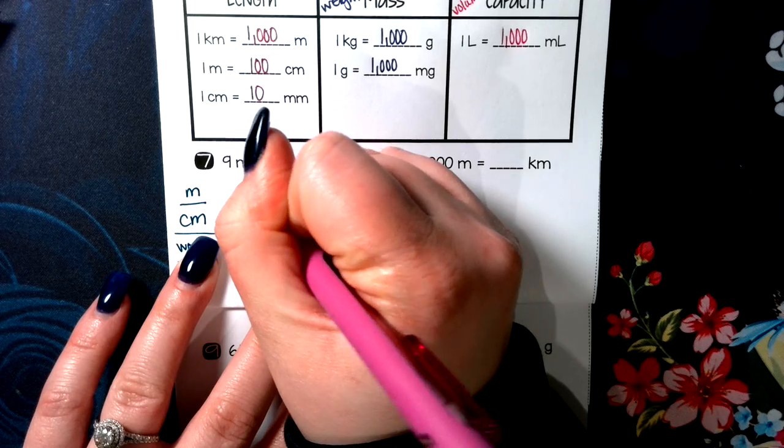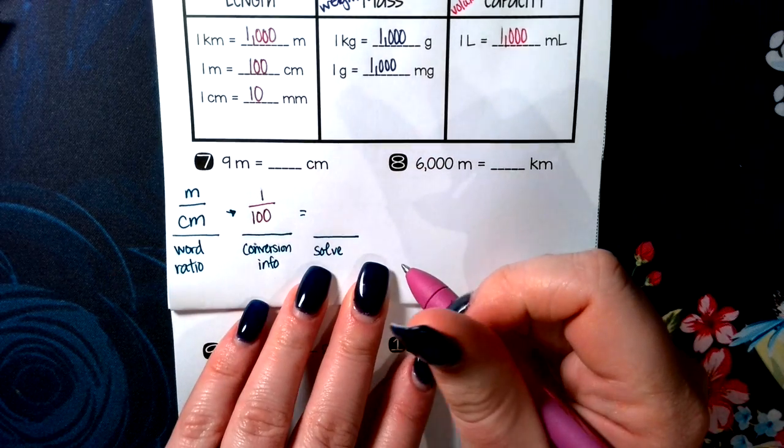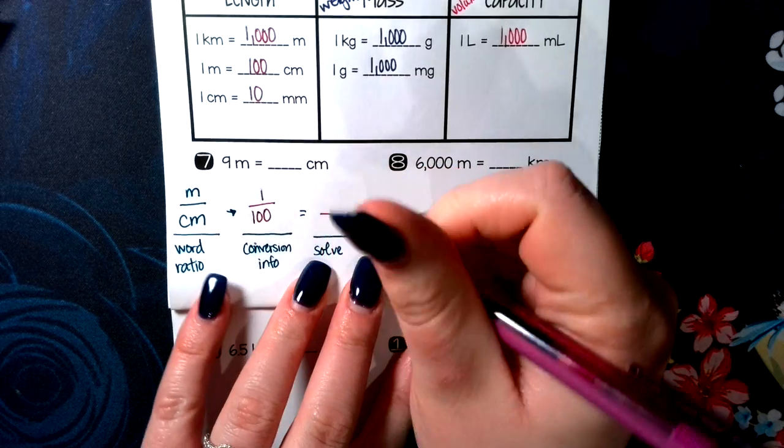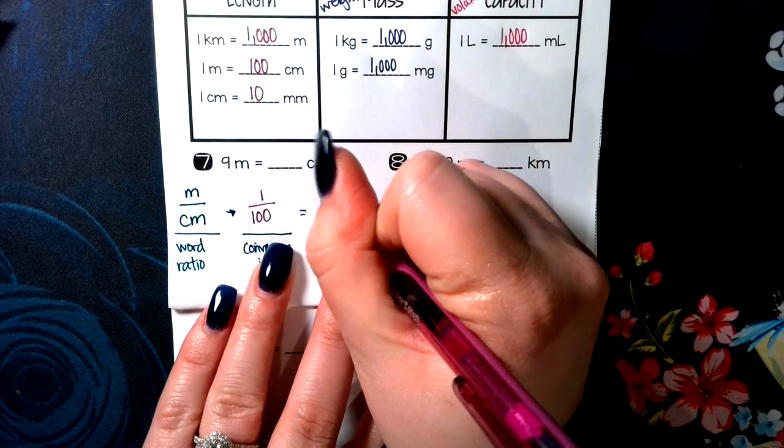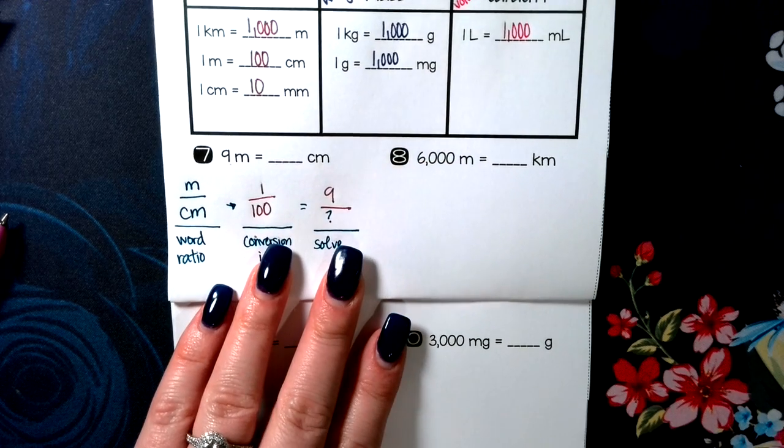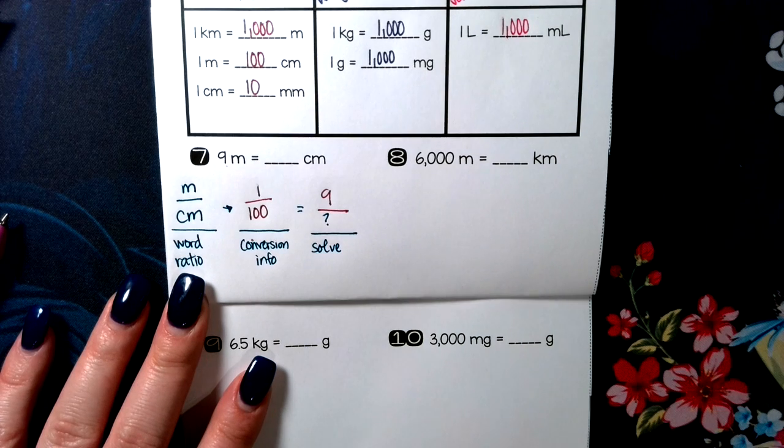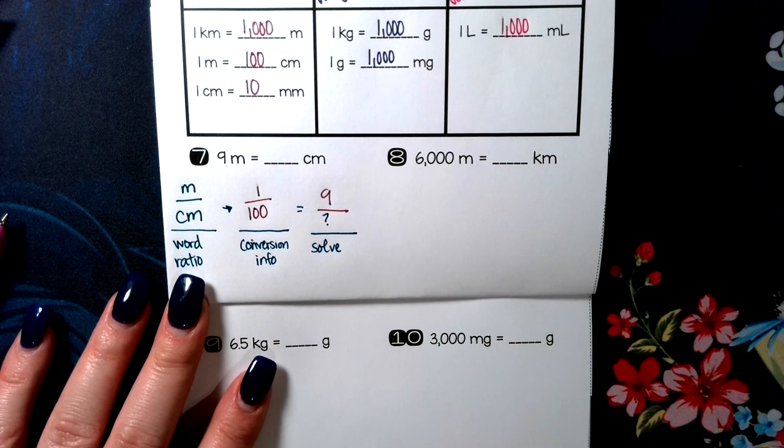One meter is 100 centimeters. And in my problem, I have nine meters. I want to know how many centimeters that is. Go ahead and solve it whichever way makes your heart happy. Pause the video. Check back with me in a minute.